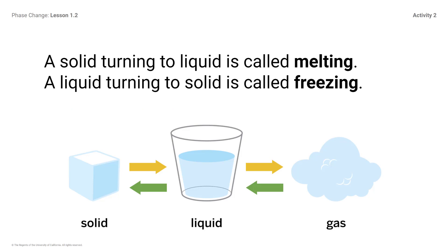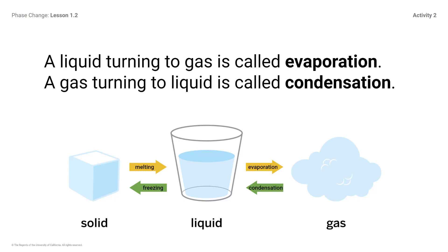A solid turning to a liquid is called melting. A liquid turning to a solid is called freezing. Where could you add the words melting and freezing to the diagram? A liquid turning to a gas is called evaporation. A gas turning to a liquid is called condensation. Where could you add the words evaporation and condensation to this diagram?